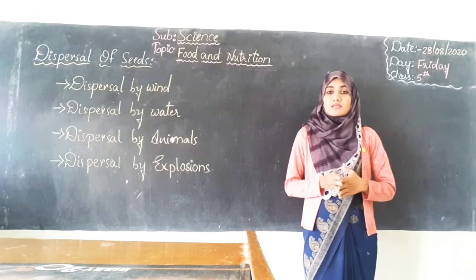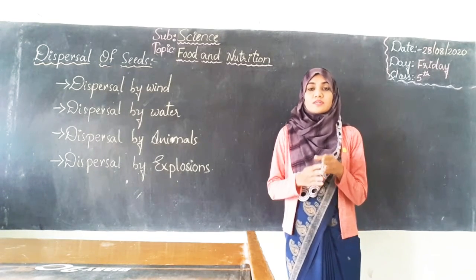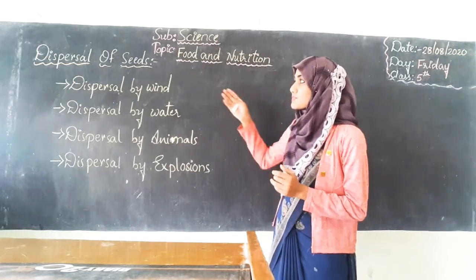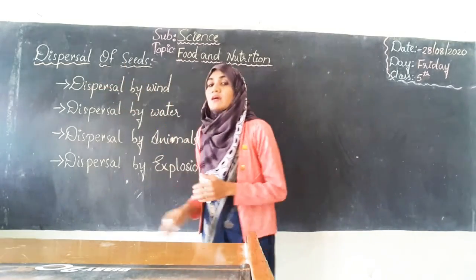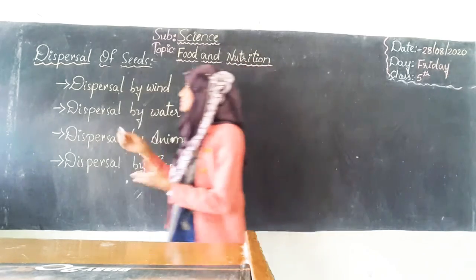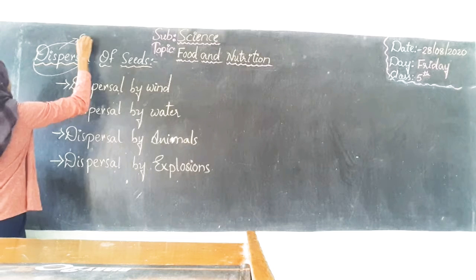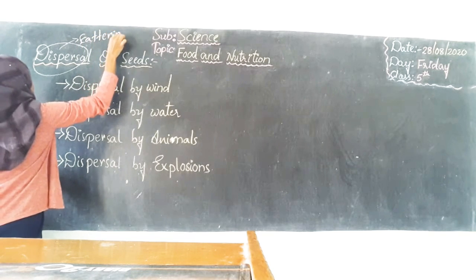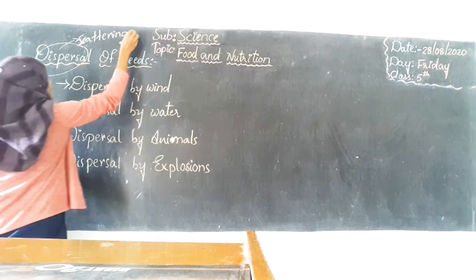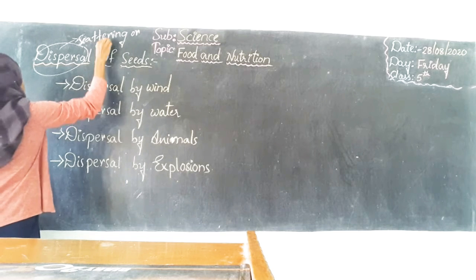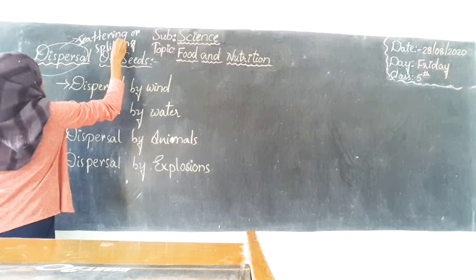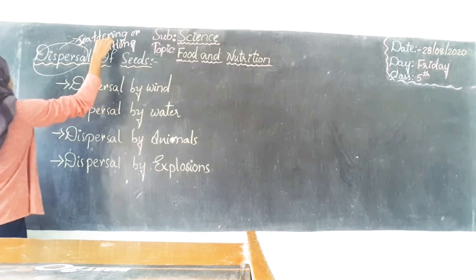Hello students. In our previous class we came to know about the reproduction of plants from seeds, and today we shall see about the dispersal of seeds. Dispersal means scattering or splitting.